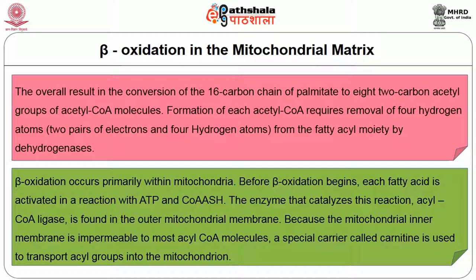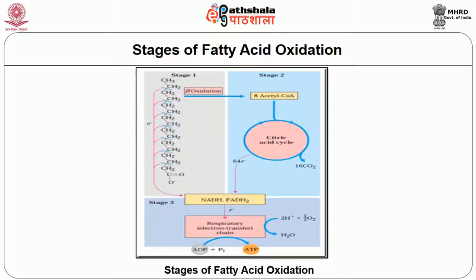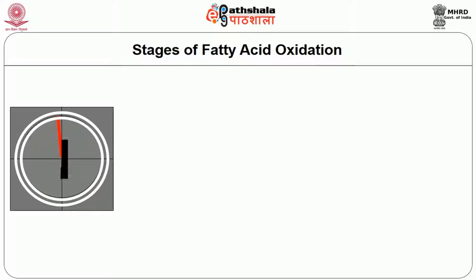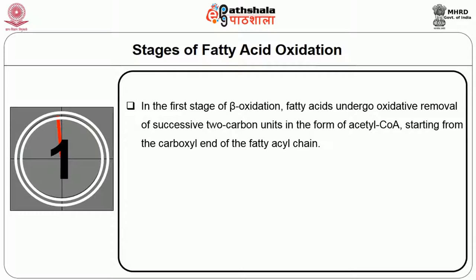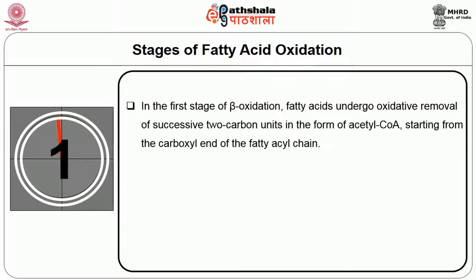A special carrier called carnitine is used to transport acyl groups into the mitochondria. The figure shows the different stages of fatty acid oxidation. In the first stage of beta oxidation, the fatty acid undergoes oxidative removal of successive 2-carbon units in the form of acetyl-CoA, starting from the carboxyl end of the fatty acyl chain. For example, the 16-carbon palmitic acid undergoes 7 passes through the oxidative sequence, releasing 2 carbons as acetyl-CoA in each pass.